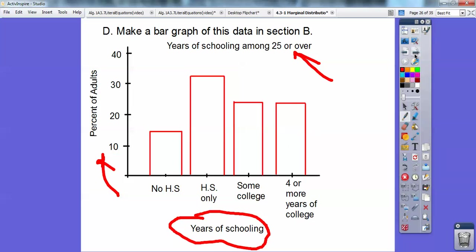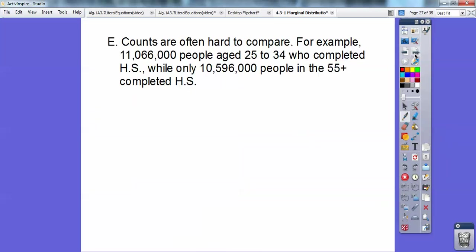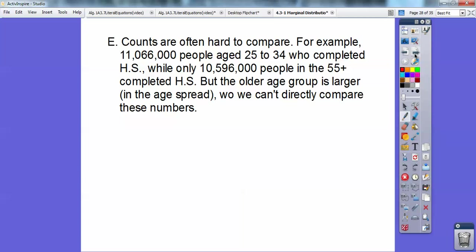Alright. Okay, let's do section E. So counts are often hard to compare. For example, 11,066,000 people age 25 to 34 completed high school, while only 10,596,000 people who completed that were 55 and above. Well, the age groups are larger intervals in the 55 and above, because you're talking about, you know, the 50s, the 60s, the 70s, my mom's in her 70s, the 80s,